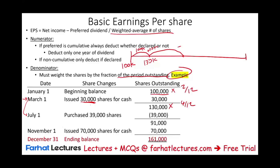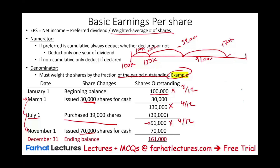Then they reduced their shares — they purchased 39,000 shares — so they had 91,000 shares. This goes from July till November: July, August, September, October — times 4/12. Then they issued 70,000 shares, bringing them up to 161,000. That's from November 1st till end of the year — all of November and December — times 2/12. Notice: 2 plus 4 plus 4 plus 2 equals 12. We accounted for all 12 months. This is how we prorate the shares.